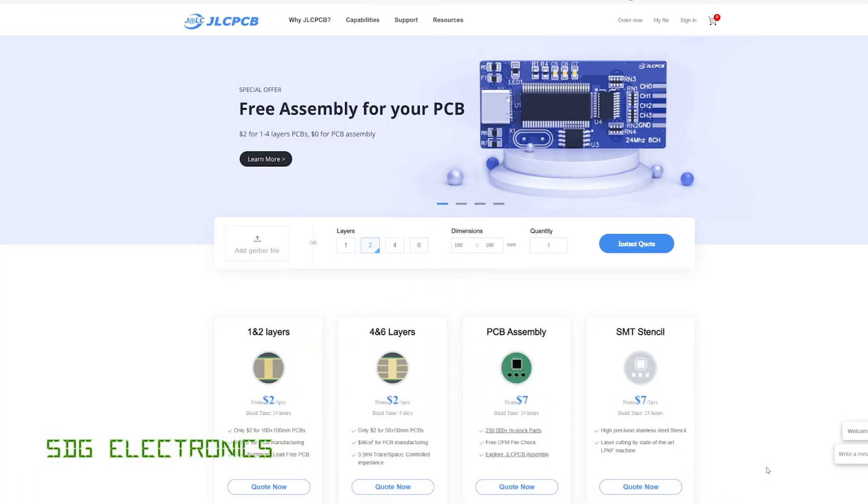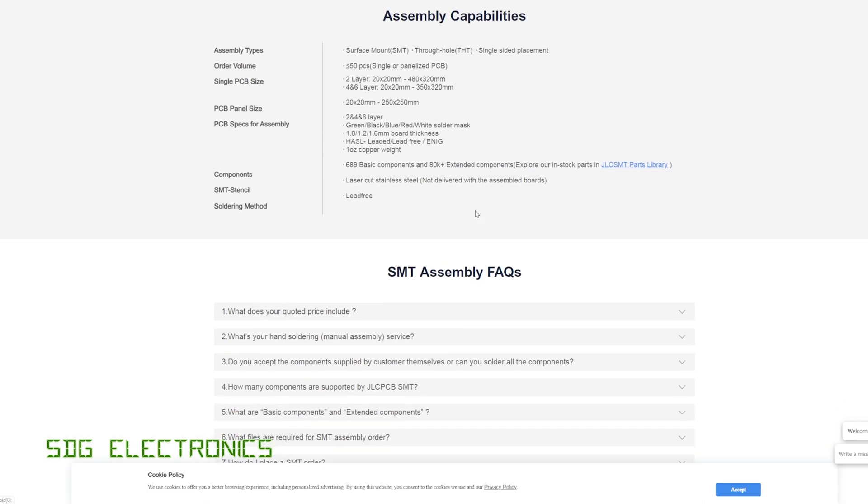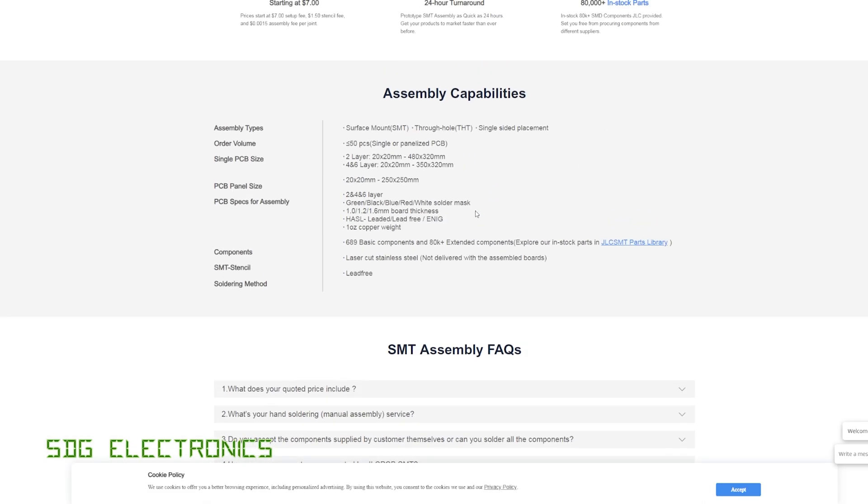A quick message from our video sponsor, JLCPCB, where you can get all different types of PCBs made, 1, 2, 4 and 6 layer in FR4 and also aluminium PCBs. They also offer PCB assembly with even more components available now. Up to 80,000 components to choose from, including through hole parts now as well. You can get connectors and all that kind of stuff soldered onto your PCB using their assembly service. Don't forget to visit JLCPCB for your PCB needs.